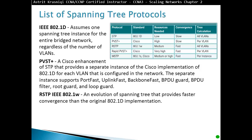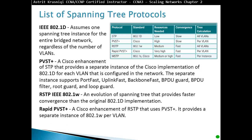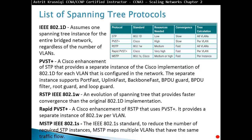Rapid Spanning Tree is an evolution of Spanning Tree that provides faster convergence. Rapid Per-VLAN Spanning Tree also provides faster convergence on a per-VLAN basis. Looking at the comparison table: 802.1D requires very low resources because only one Spanning Tree runs, but it is very slow to converge, with tree calculation across all VLANs.